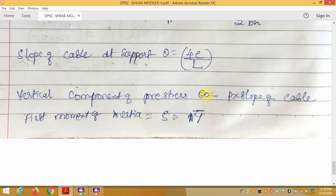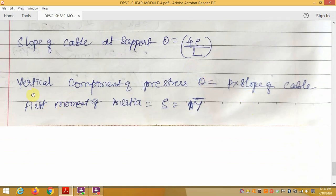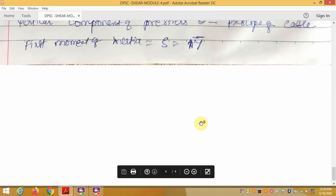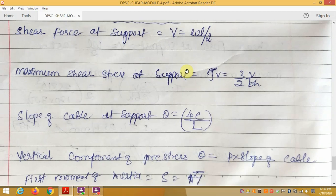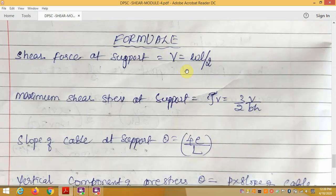Vertical component of pre-stress theta equals P times slope of the cable. First moment of area, S equals A times Y bar. These are the important formulas which will help you in finding the solutions for the problems.